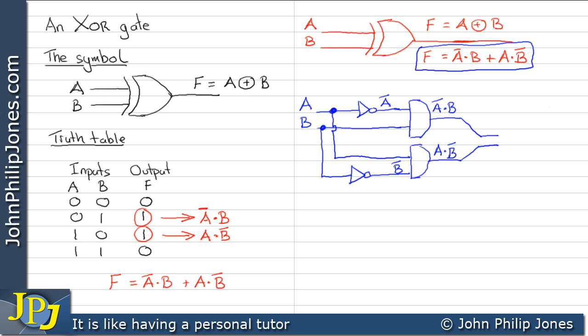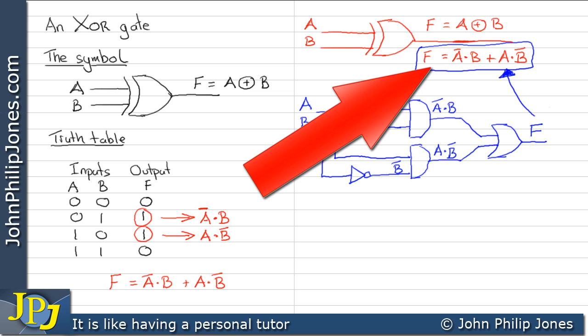And of course what I can now do is take these in through to a two-input OR gate, and the output F will be this boolean expression that you see here.